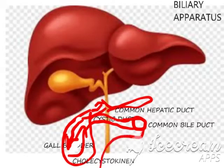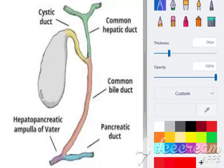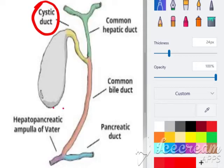The part of the GI tract where bile is delivered is the duodenum, which is the first part of the GI tract, where absorption occurs. This is a very simple process. Now let's talk about how the biliary apparatus works. The cystic duct is opened and closed via the spiral valve, which is made by the mucosa surrounding it in a spiral formation.